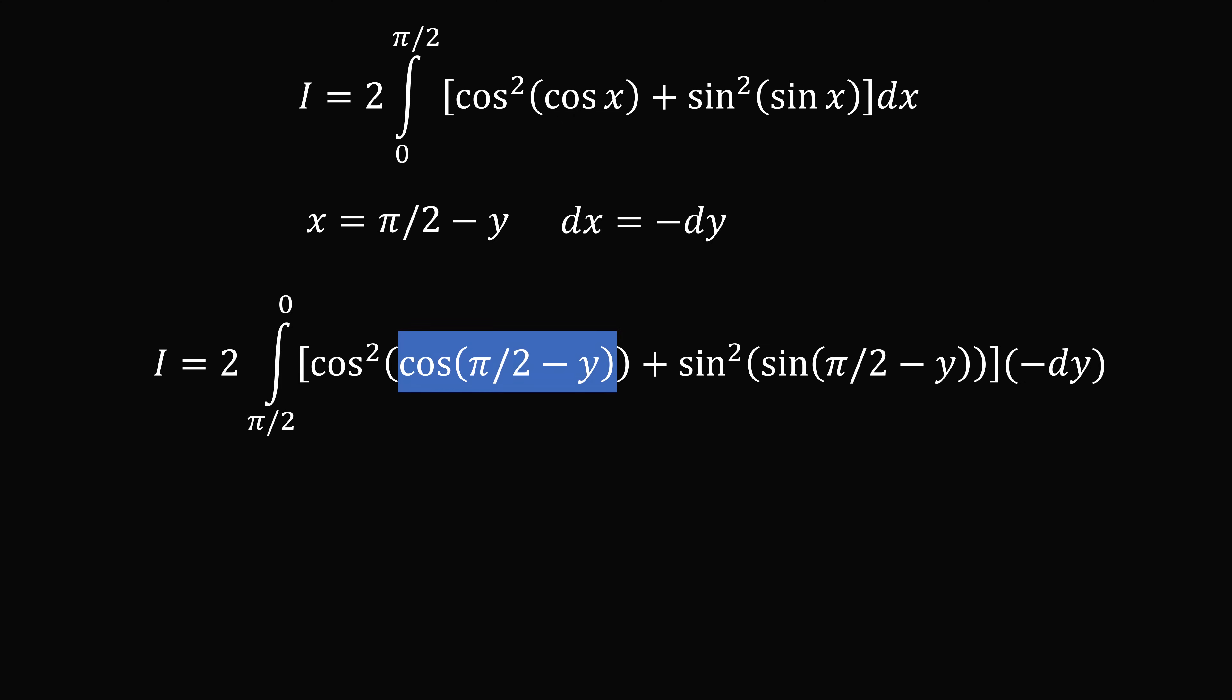So now let's simplify this. Cosine of pi over two minus y is equal to sine of y. And sine of pi over two minus y is equal to cosine of y. Then we have this negative dy, which we can cancel out by flipping the limits of integration.